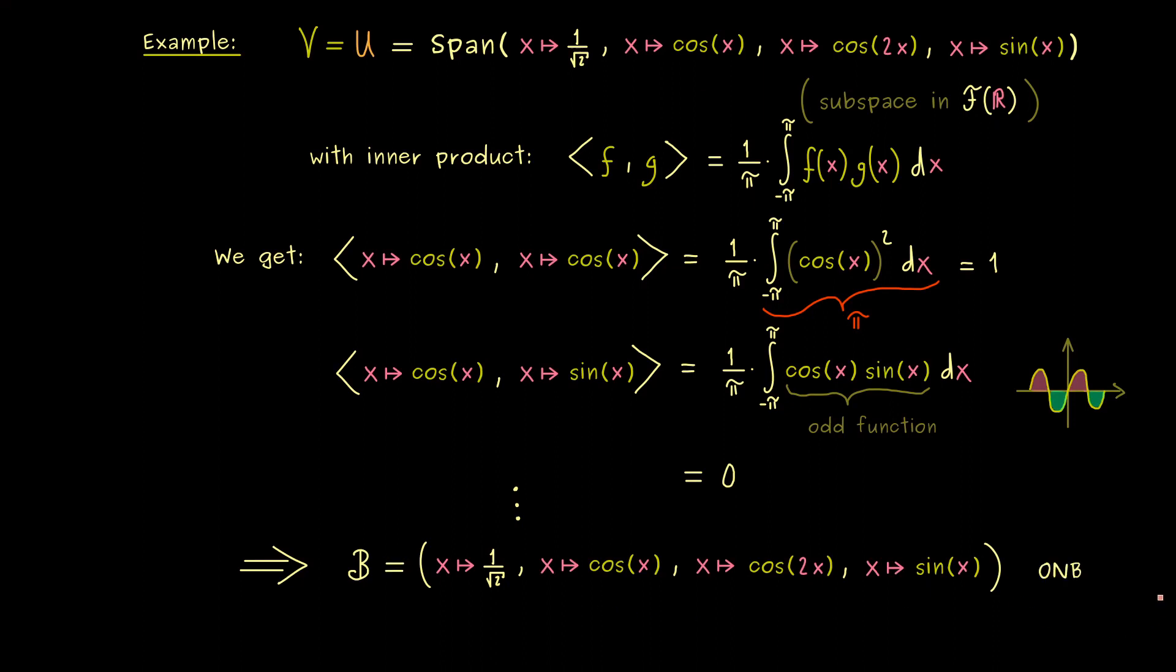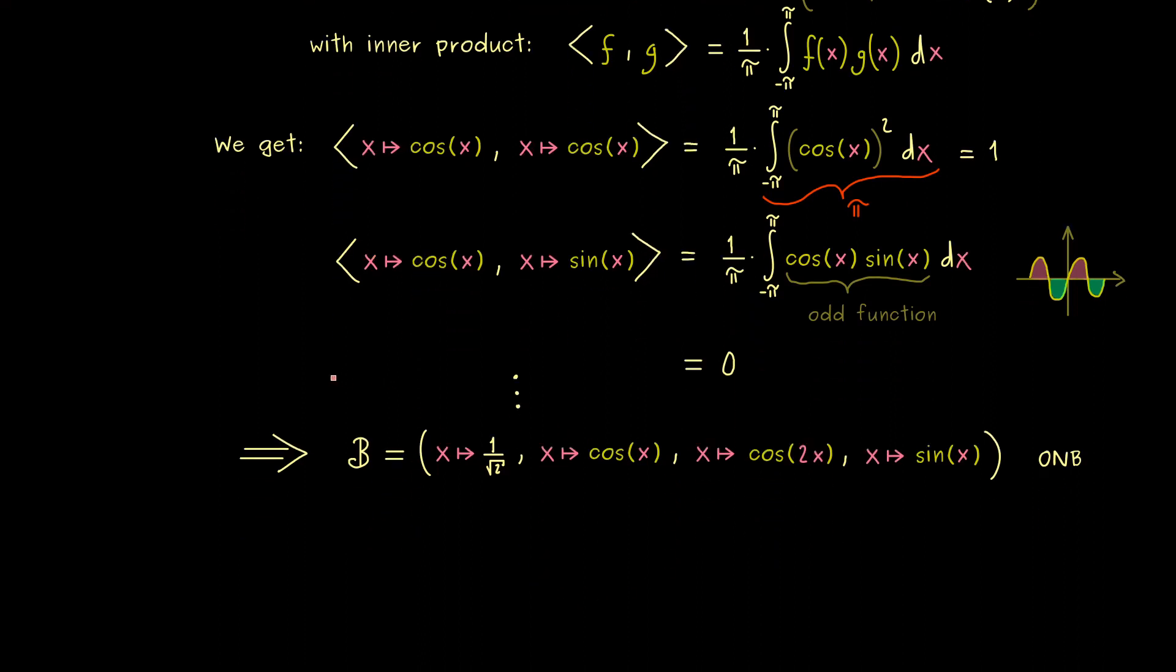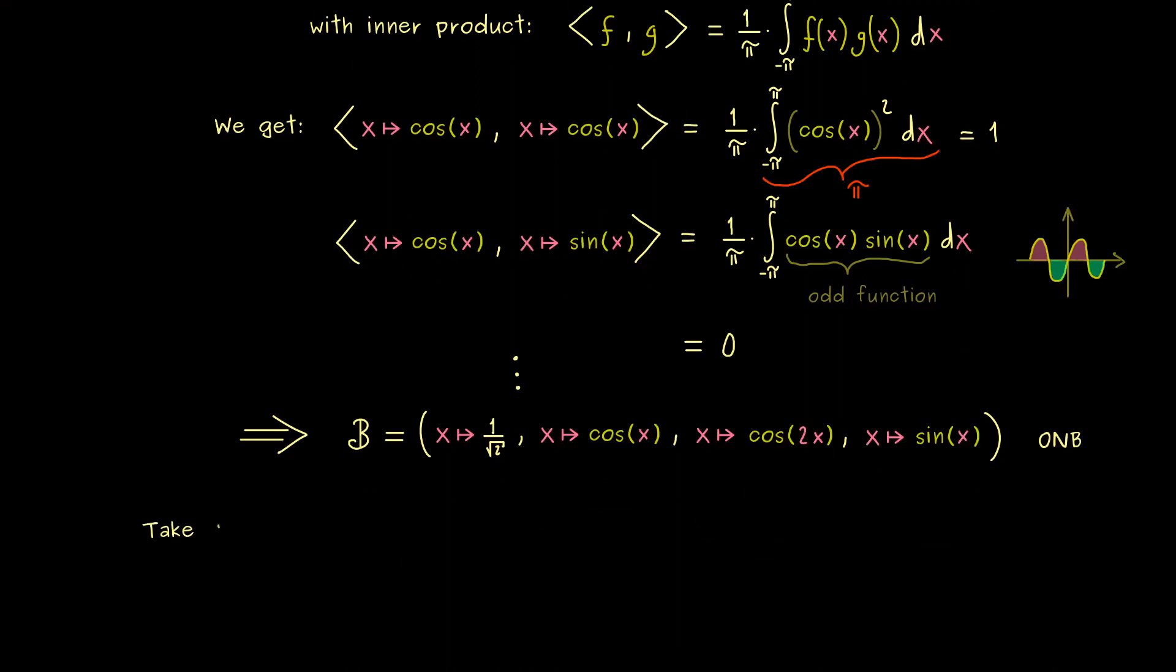So maybe let's call it B as before. So this is our ONB. Of course we say ONB with respect to this chosen inner product. And therefore this constant here is important to set the length of the cosine function or the sine function to 1. Okay, and now for our example we want to calculate the Fourier coefficients for a function. So let's take a function u given by u of x is equal to sine of x squared.